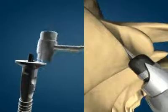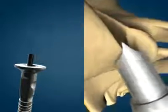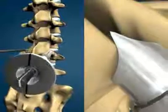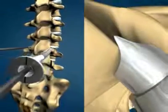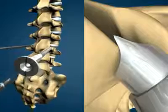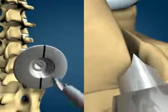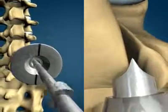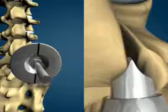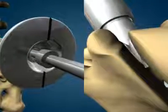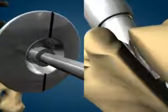Gently tap the drill guide into place. Remove the facet locator. Insert the drill into the drill guide. Drill until the depth stop touches the guide then remove the drill.